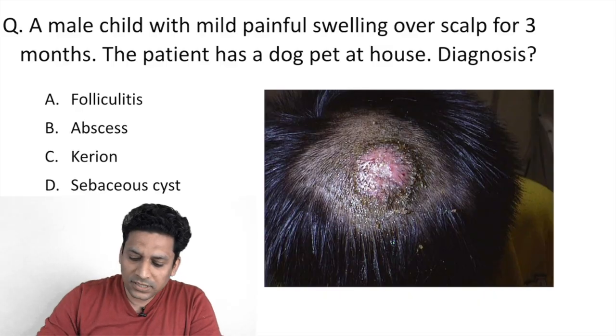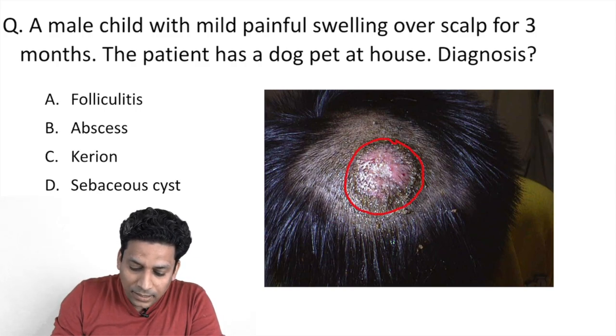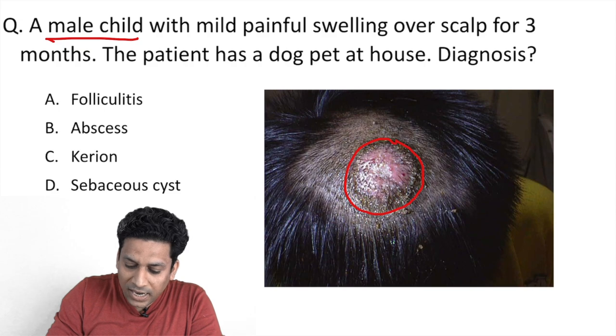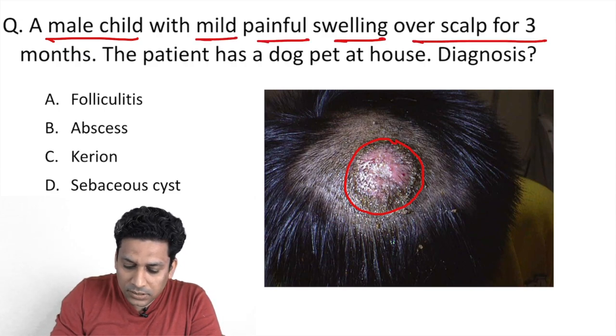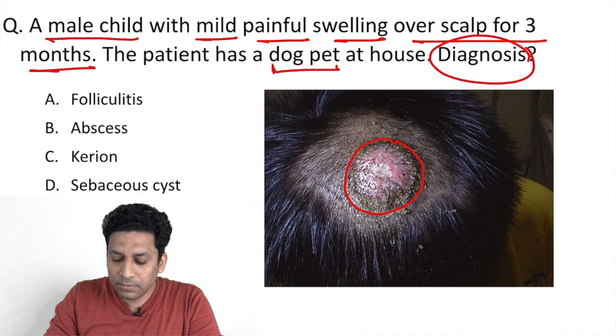Hello students, welcome back. Today we are going to discuss the next question which was recently asked in NEET PG 2021. In this question, one image was shown where over the scalp of a child there was a swelling present. A male child presented with mild painful swelling over scalp since three months, and the patient has a dog as a pet at home. What is the diagnosis?